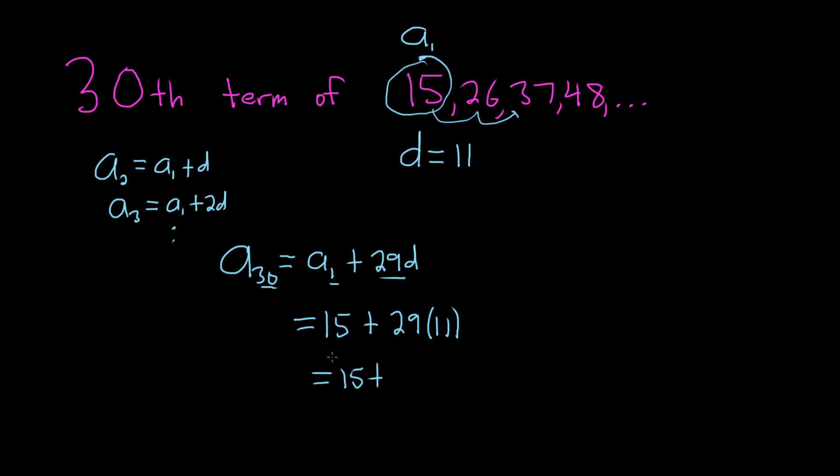plus, I'm going to use my calculator for this part, 29 times 11, 319. So 319. So 15 plus 319 is going to give us 334.